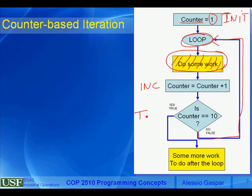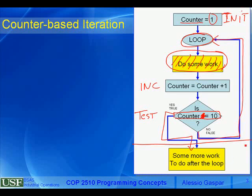The test uses a conditional with a Boolean expression: is counter equal to 10? Note: in Raptor, use a single equal sign, not the double equal sign used in Java and C++. If the condition is true, we go to the next statement after the loop. If false, we connect back to the loop label and start executing the statements inside the loop again.